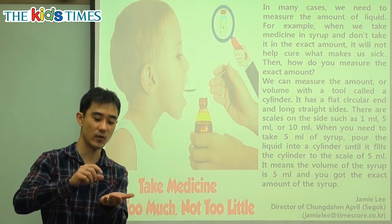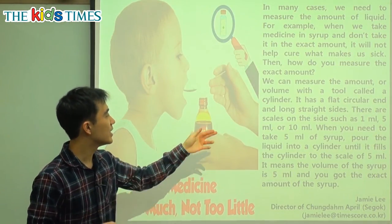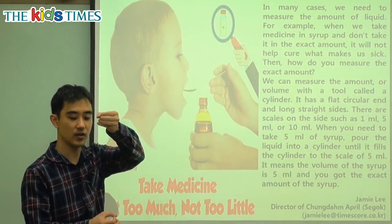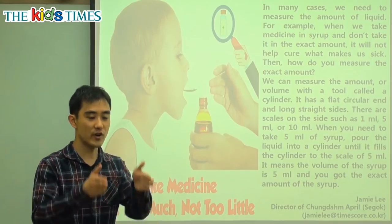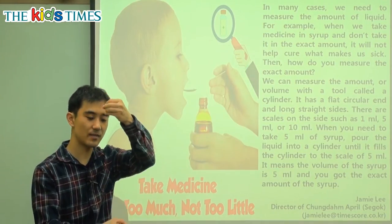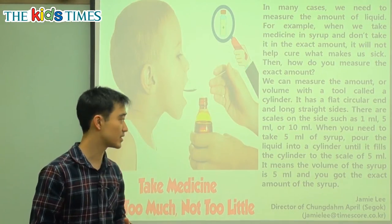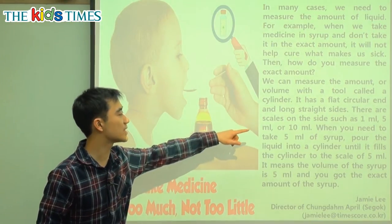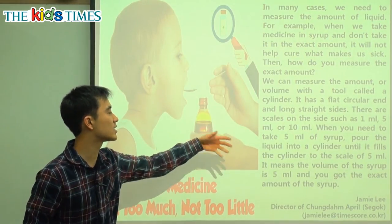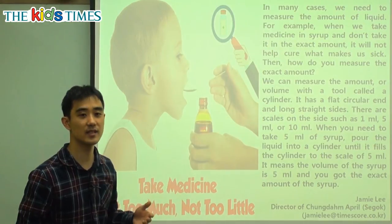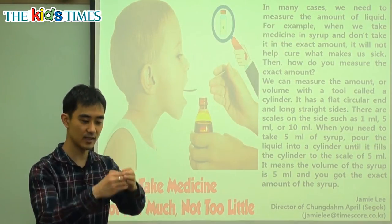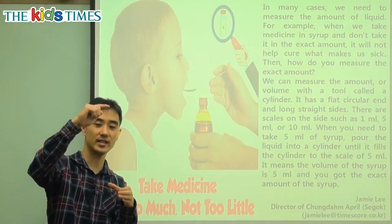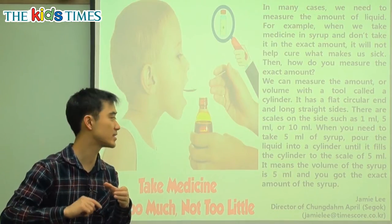A cylinder looks like this. It has a flat circular end — it's flat and a circle — and long straight sides. So it's a circle on top and it's long. There are scales on the side, such as 1 milliliter, 5 milliliters, 10 milliliters. We can see how much volume is in there.